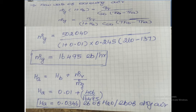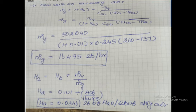The outlet humidity HA equals HB plus M-dot-V divided by M-dot-G. HB is the known inlet humidity, M-dot-V and M-dot-G are already calculated values. Substituting, we get HA equal to 0.0346 pounds of water per pound of dry air. Keep in mind: hot air entering temperature is THB, hot air outlet temperature is THA. Correspondingly, entering humidity is HB and leaving humidity is HA. HB is entering humidity; HA is leaving humidity.